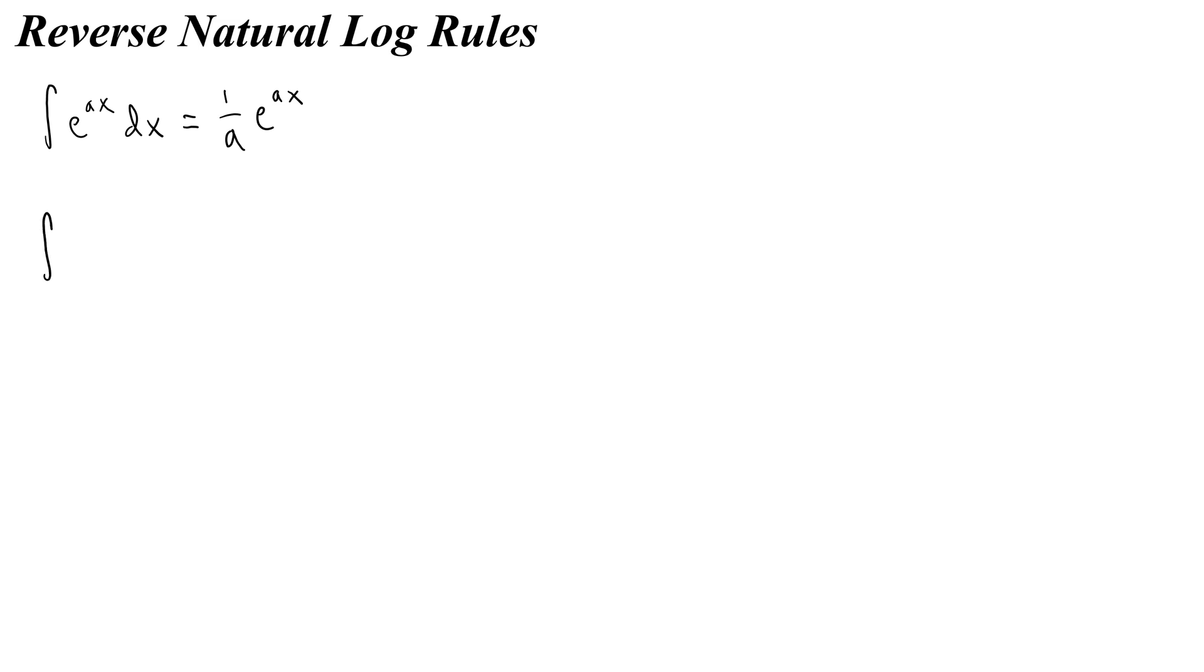So let's do an example. How about the integral of 2e to the 3x dx. Then what you would do is you'd say a is 3, and I would pull this 2 out here. So 2 times 1 over a, which is 3, e to the 3x, all plus c. Then I simplify it, and that's 2 thirds e to the 3x plus c. Easy.